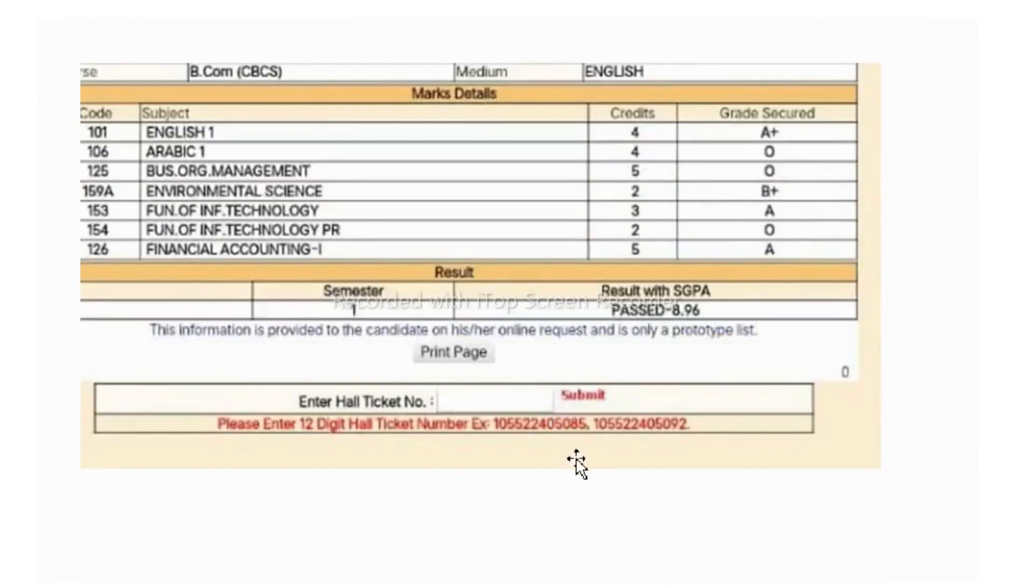So how to calculate that credit points? Now here you can see A plus is there. For A plus, they have given a 9 grade point. And for O, 10 they have given. So how we have to calculate that credit point? We have to do multiplication for this 9 into 4, that equals to 36.